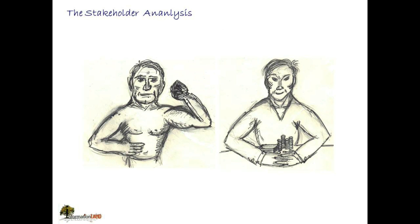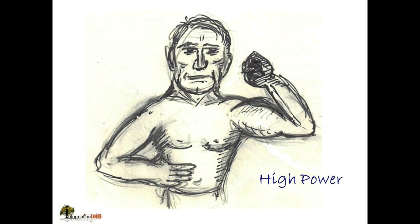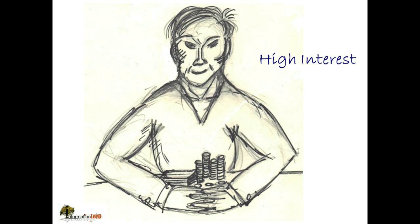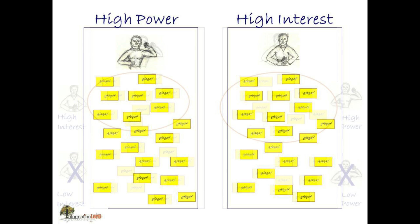We can go a step further and do a straight stakeholder analysis. Who are these stakeholders? We look at two sorts: they either have a lot of power — so they're extremely important in what they can do — or they have a high interest to do things. Sometimes these come together and sometimes not. We make a short list of those with high power and those with high interest. The ones placed highest on these sheets with our post-its score highest, and the ones at the bottom score lowest.